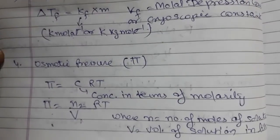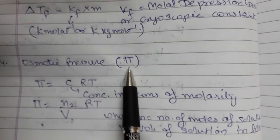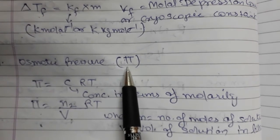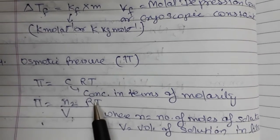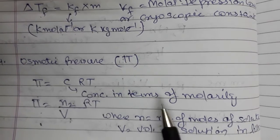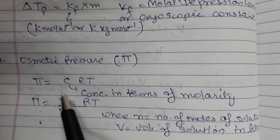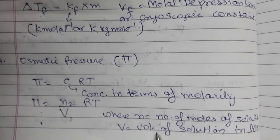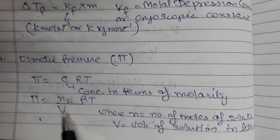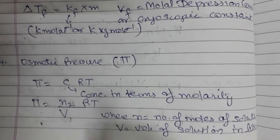The next property, which is our last one, is osmotic pressure. It will also be covered via a video link. Osmotic pressure is denoted by pi in some books and by capital P in others. This osmotic pressure is equal to CRT, where C is a concentration term — but here it is in terms of molarity, not molality. Molarity is the number of moles of solute dissolved per liter of solution, where V is the volume of solution in liters. If volume is given in milliliters, we divide to convert it to liters. This is the fourth colligative property.